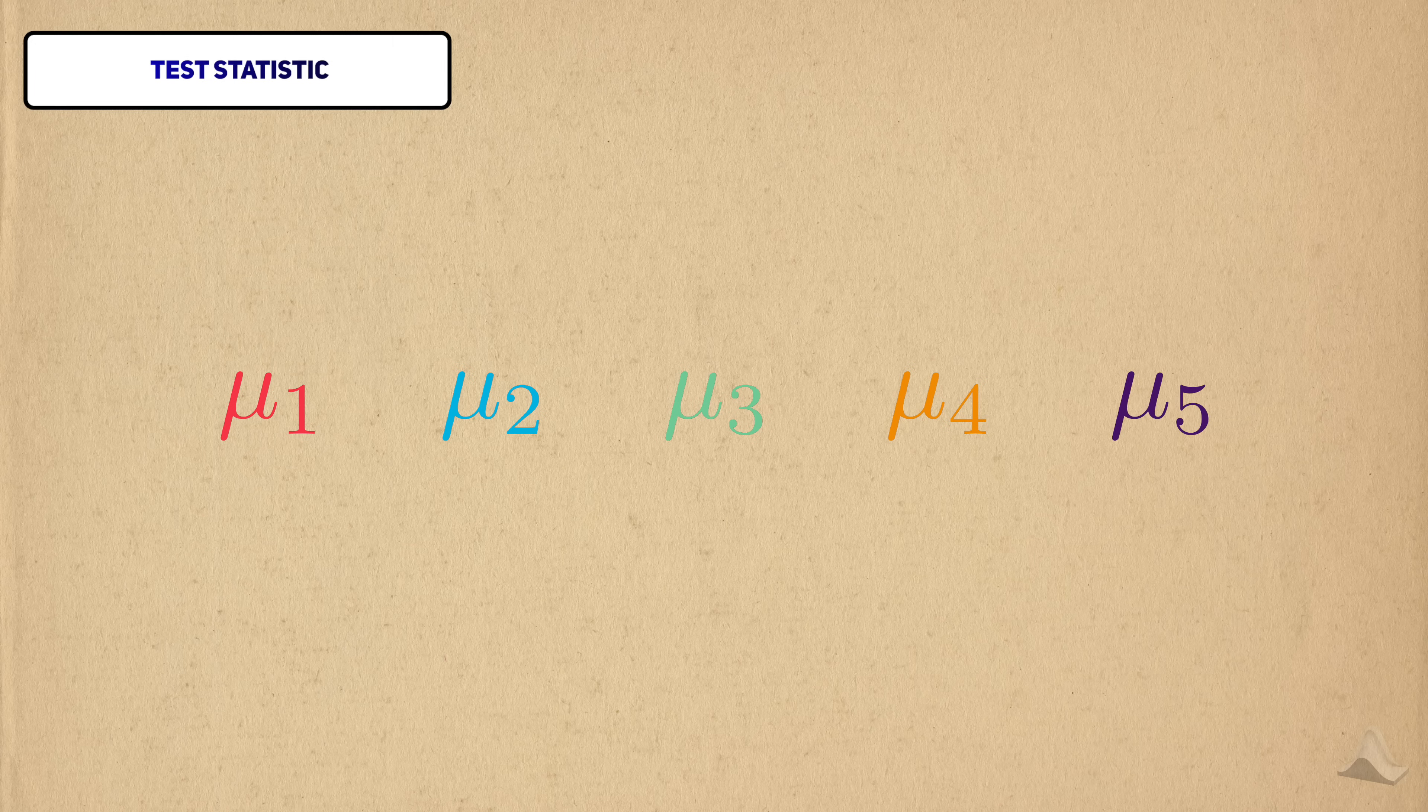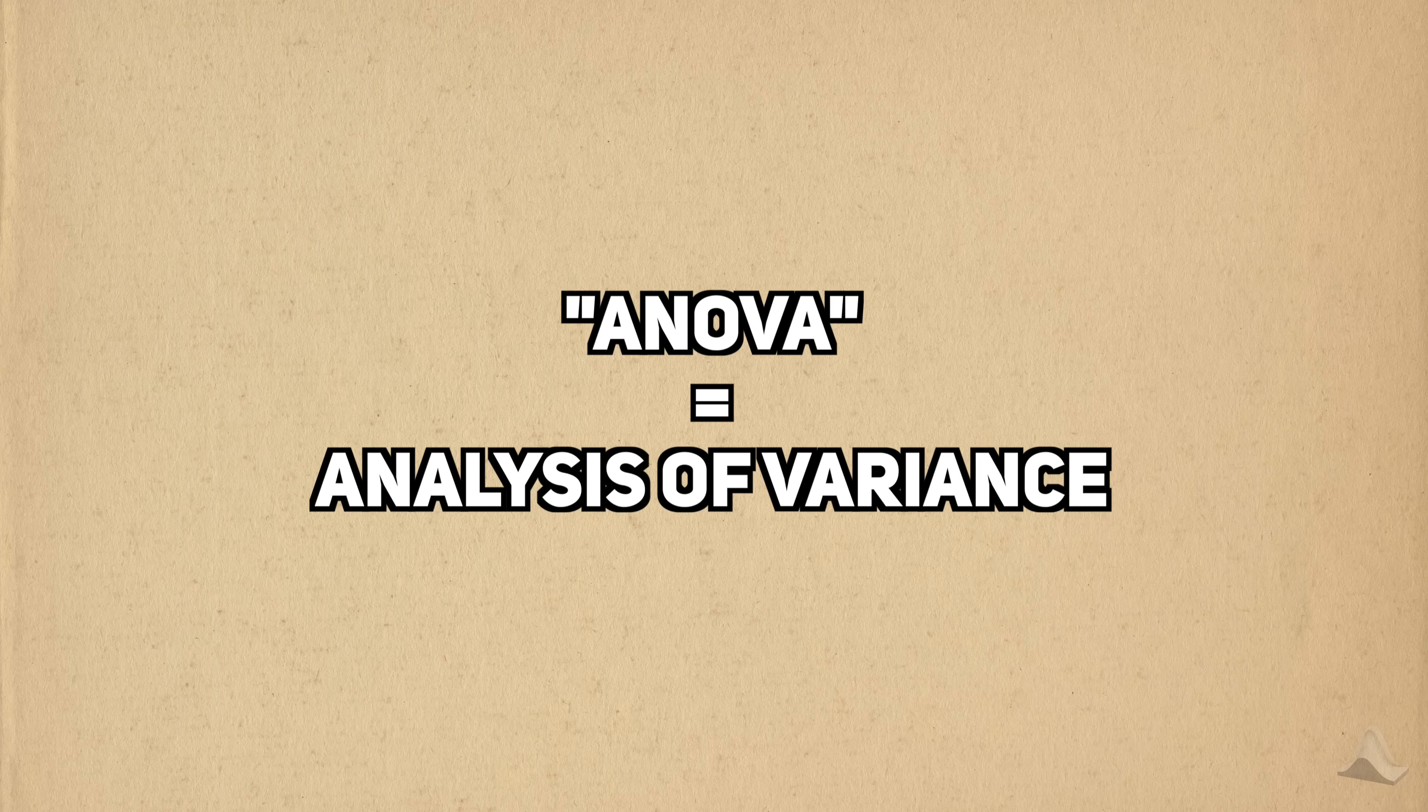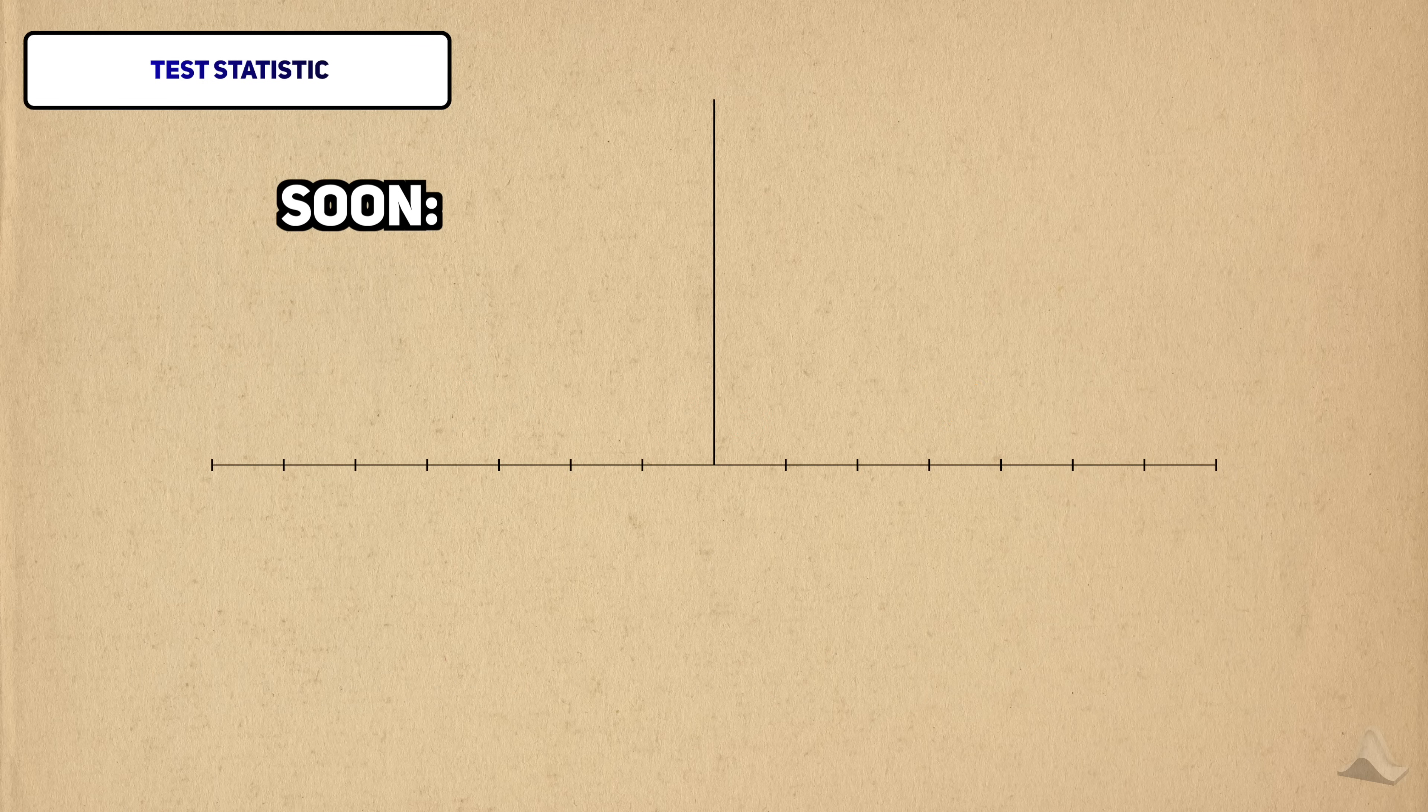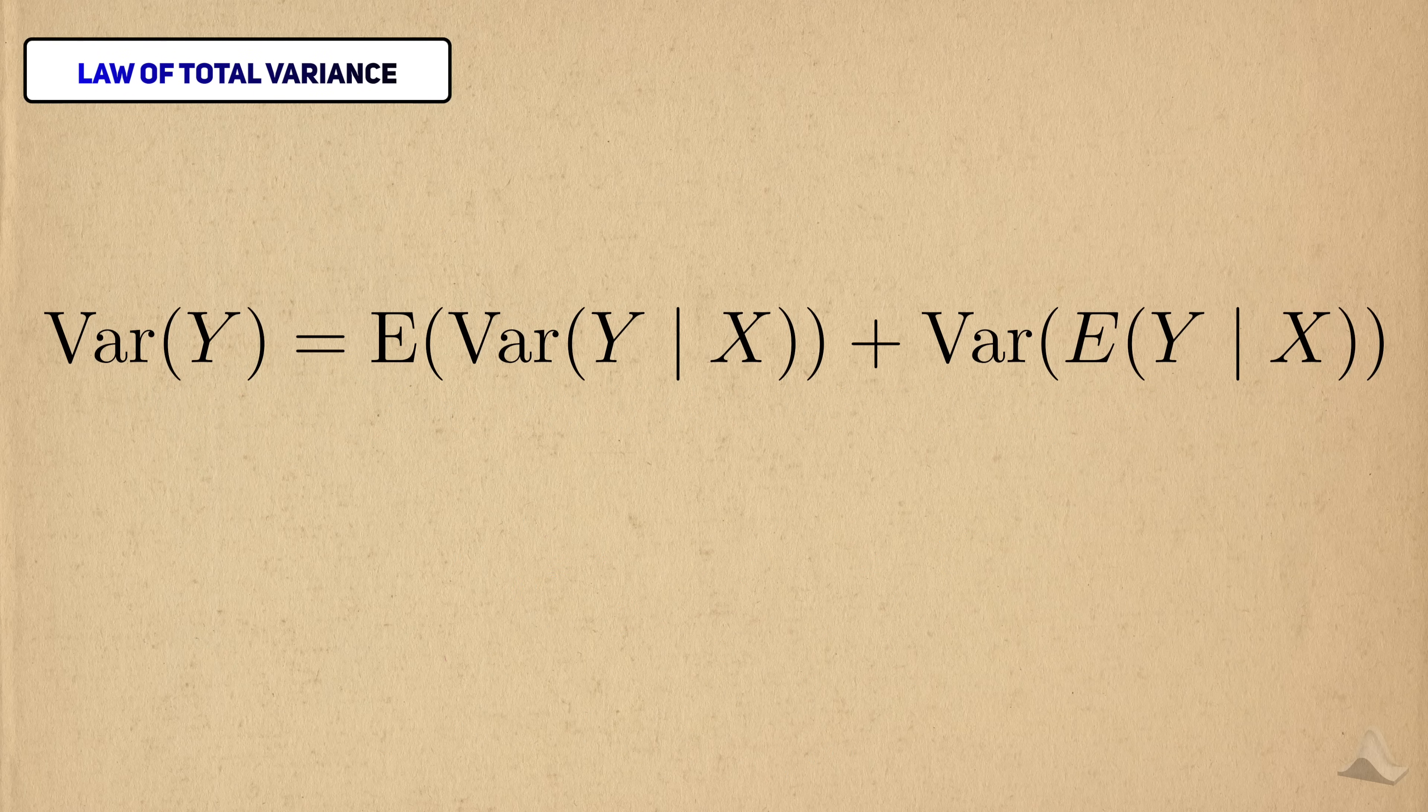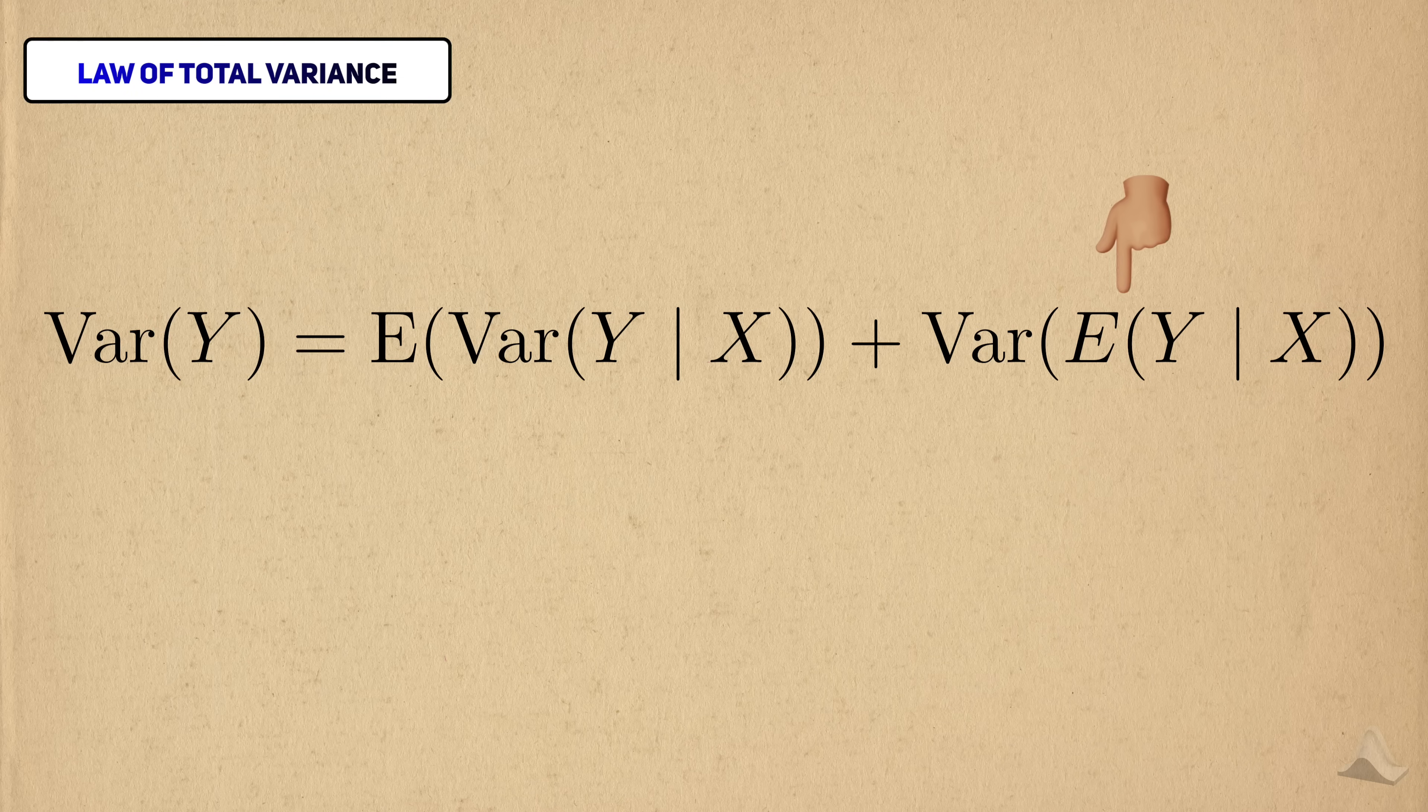Next up is the test statistic. Even though we're interested in the means of the groups, they aren't what we look at when we do an ANOVA. Remember that ANOVA stands for analysis of variance. So instead, we're dealing with the variances in the data. This can be really confusing at first, so we'll try to develop an intuition on why this is the case. Rather than show you the test statistic immediately, I'll start with an important theorem in probability called the law of total variance, which is given by this equation. In our case, Y is the outcome, while X represents the cancer group that someone is in.